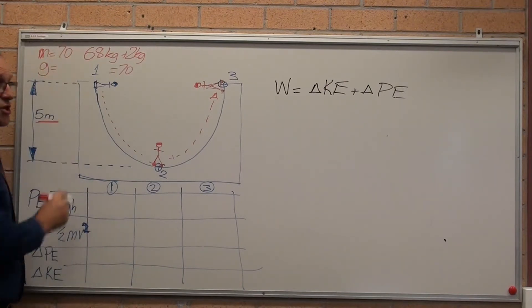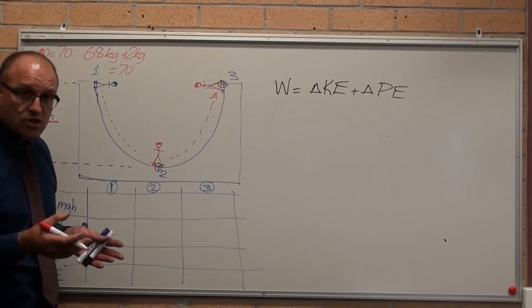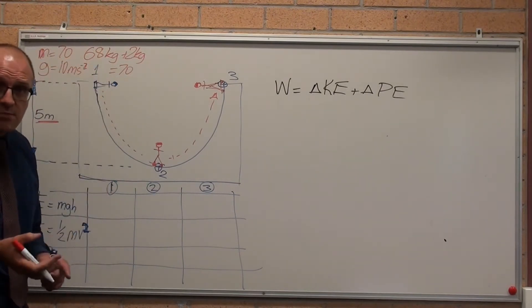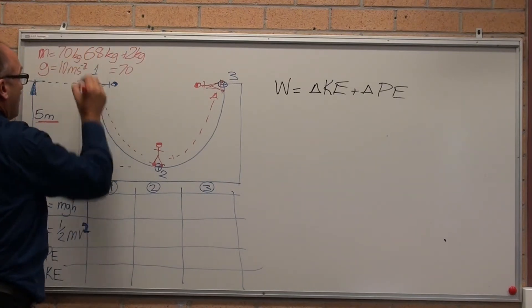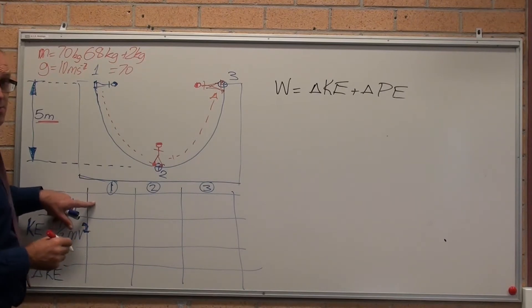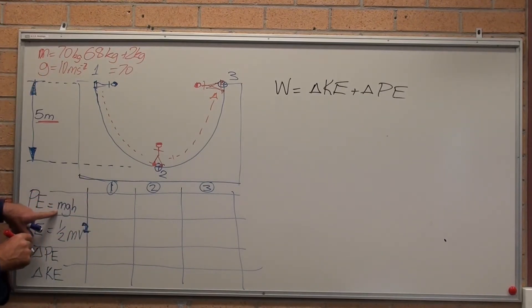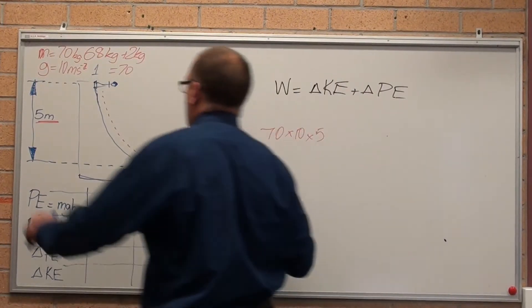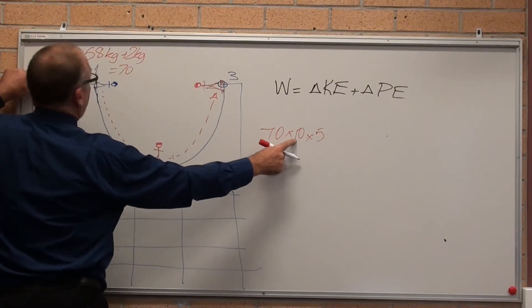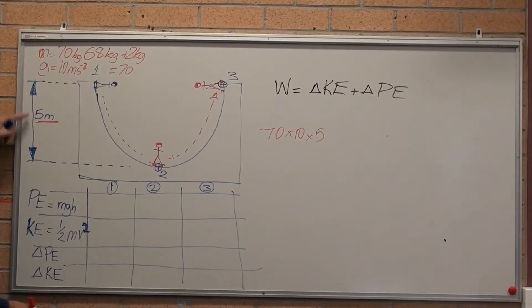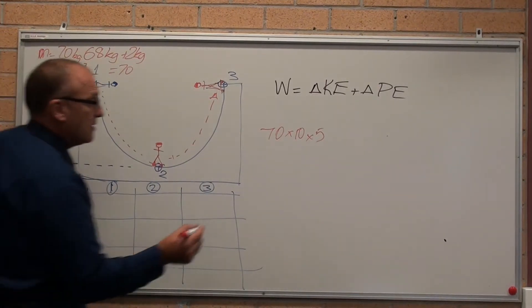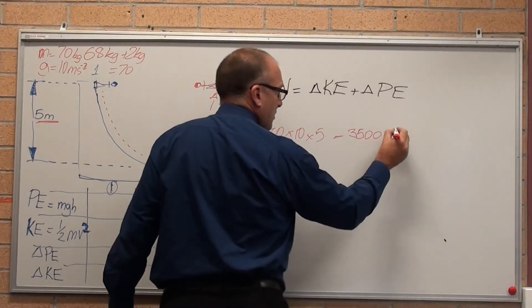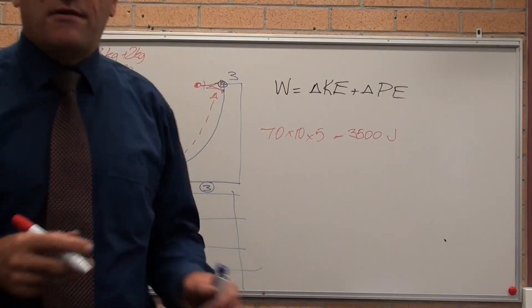We know that the acceleration due to gravity, the engineering study's approximation, is 10 meters per second to the minus 2. 10 meters per second per second. His mass is 70 kilograms. Up here, what's his potential energy? It's mass times gravity times height. 70 times 10 times 5. And that equals 70 times 10, 700, 3,500 joules. So that equals 3,500 joules.